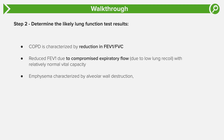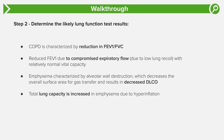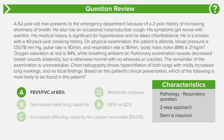In emphysema, the alveolar walls are destroyed, which decreases the overall surface area for gas transfer, resulting in a decreased diffusion capacity — or DLCO — not increased as stated in answer choice C, so that's wrong. Total lung capacity is increased in emphysema due to hyperinflation, not decreased as noted in answer choice B. The correct answer is answer choice A: FEV1 over FVC ratio of 65%, which is how we characterize COPD. Vital capacity stays the same while forced expiratory volume over one second interval decreases.